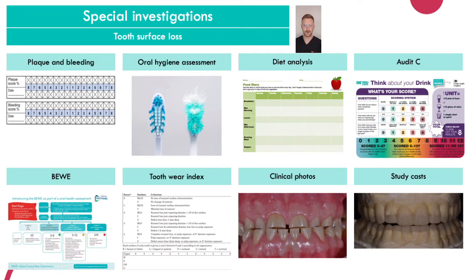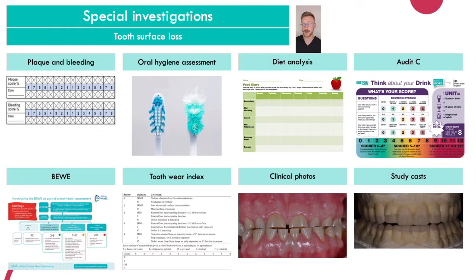Moving on to special investigations. Some of these should feature in absolutely every answer regardless of what you're looking for. Plaque and bleeding scores — always include these to assess oral hygiene. An oral hygiene assessment is really important in a wear patient, especially with abrasion. You want to identify if they're using a manual or electric brush, whether they're using an abrasive toothpaste, and whether they're using too much pressure. If their toothbrush looks frayed and splayed, you know they're scrubbing away their enamel.